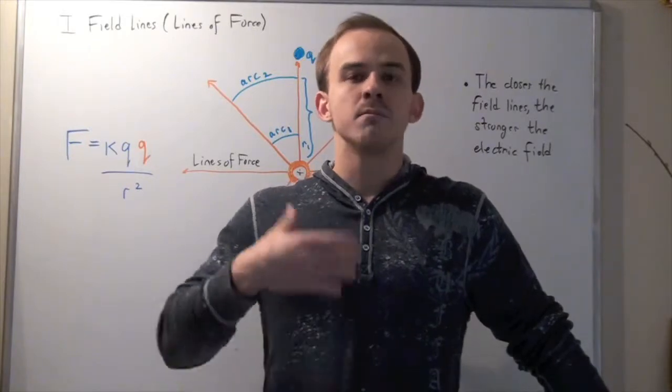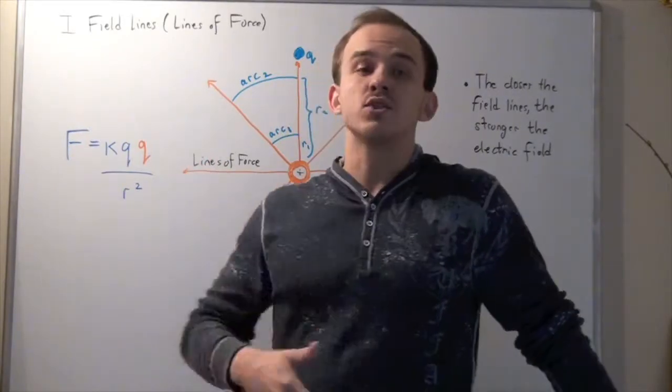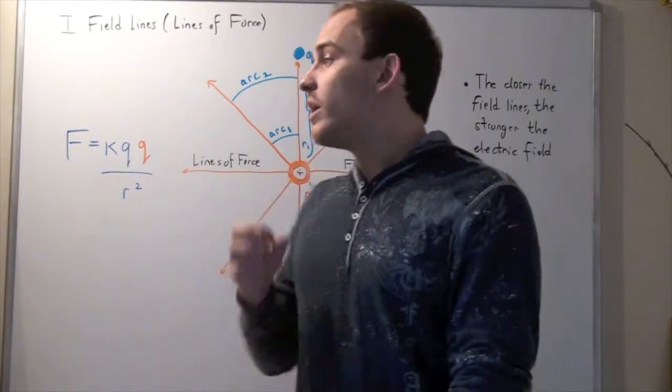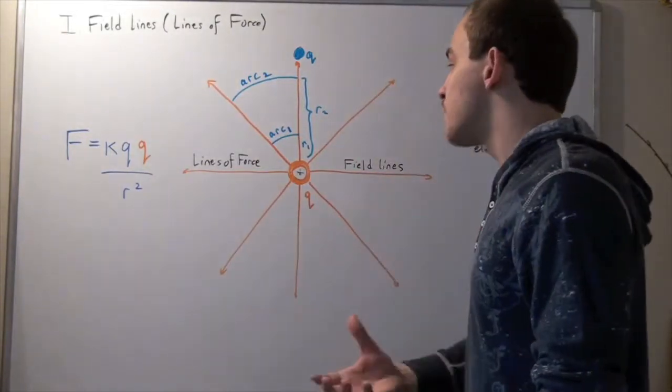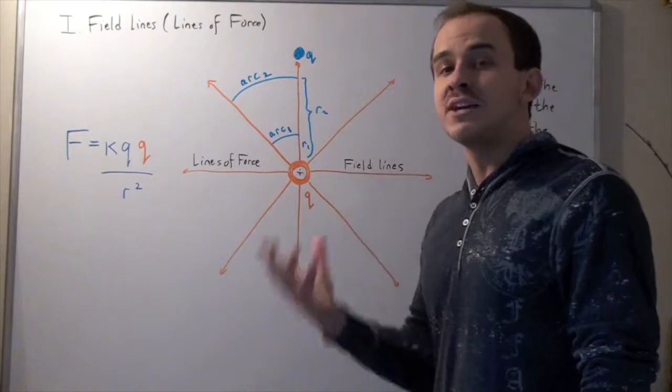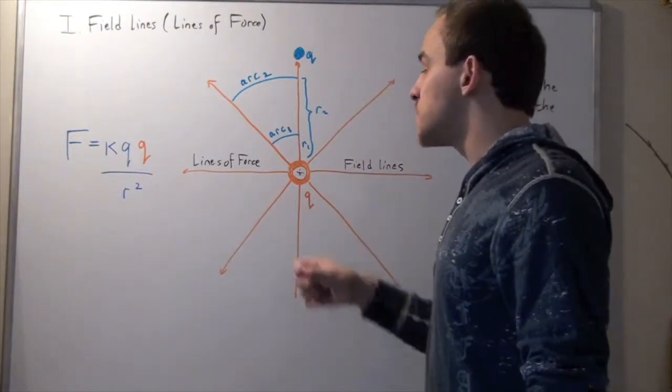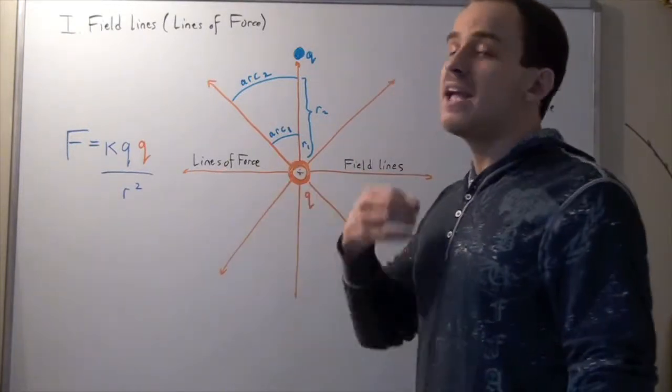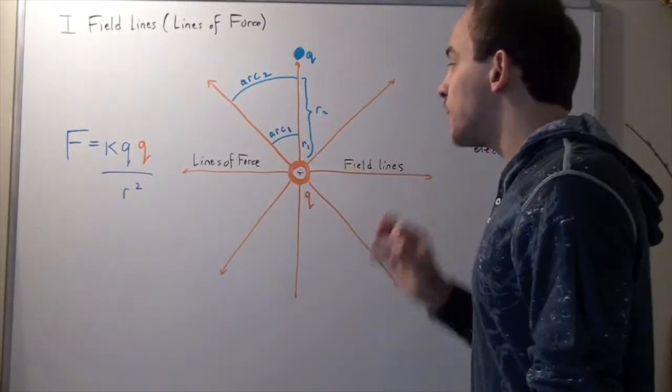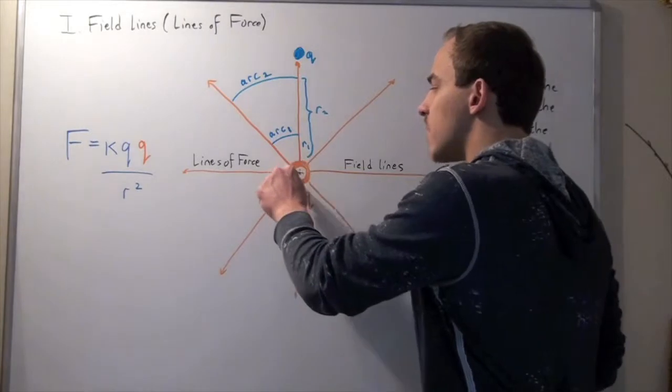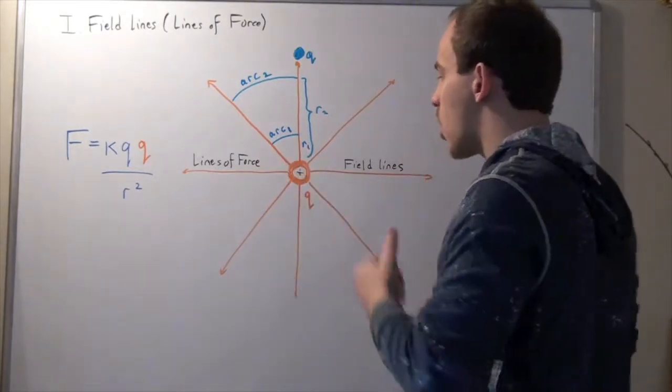And this electric field is composed of these field lines or lines of forces. So if we have a positively charged sphere or a point charge, this guy will create an electric field that's composed of these lines of forces. And these field lines will extend outward and will be perpendicular to the surface of our sphere or our point charge.